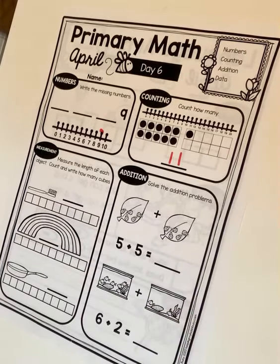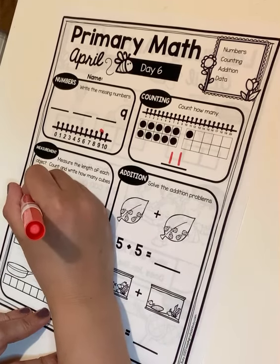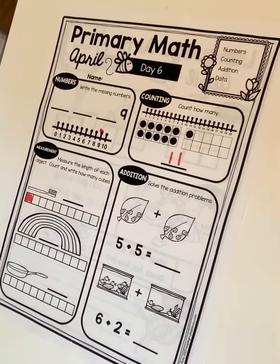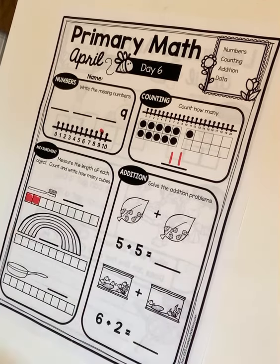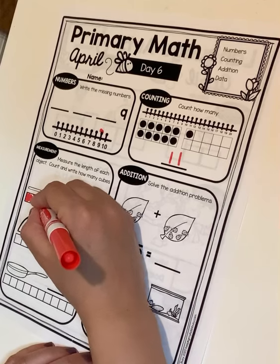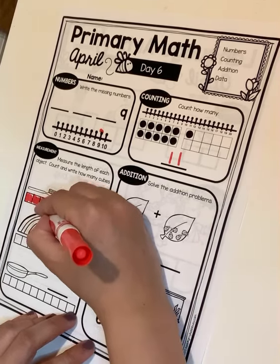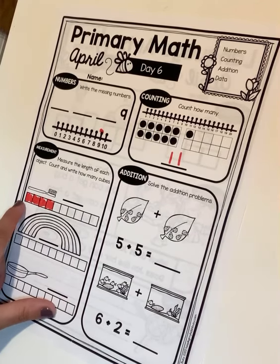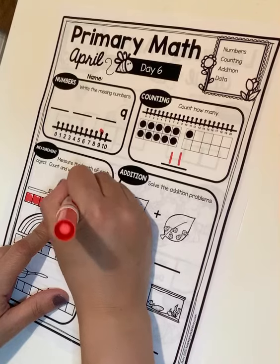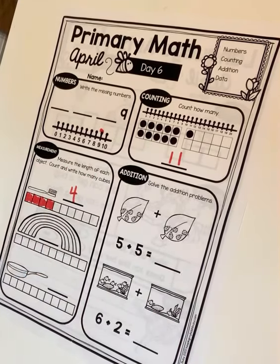So right here, let's count and see how many cubes it takes to get to the end of the toothbrush. So there's one, two, three, and four. Is it any more than four? No, it's four cubes long. So I'm going to just write a four. It took four. It took four cubes to measure that toothbrush.